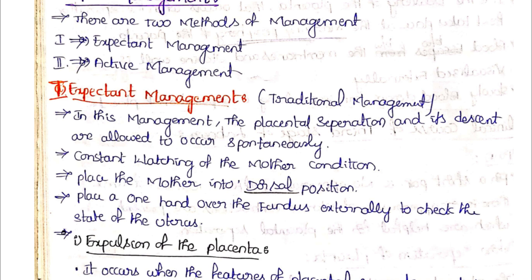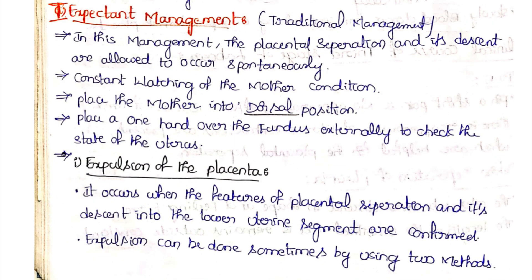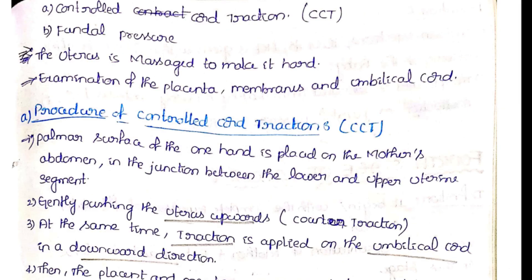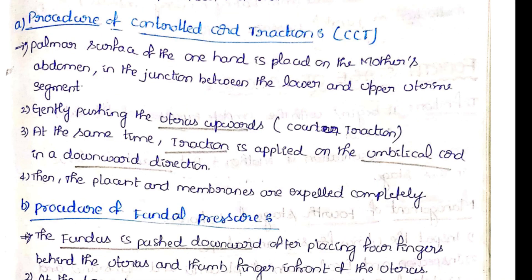In expectant management, we watch the mother's condition continuously. The mother is placed in the dorsal position. One hand is placed over the fundus externally to check the status of the uterus. Expulsion of the placenta occurs when features of placental separation and descent into the lower uterine segment are confirmed. Expulsion can be done by two methods: controlled cord traction and fundal pressure.